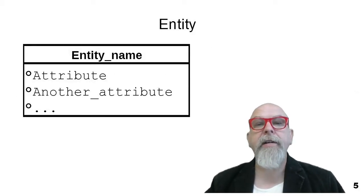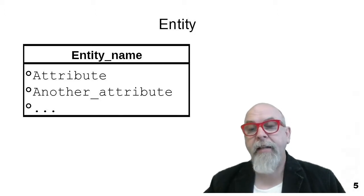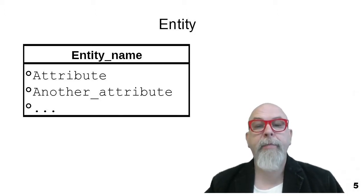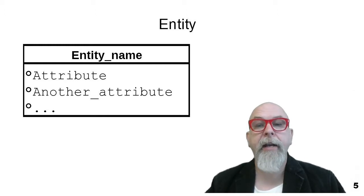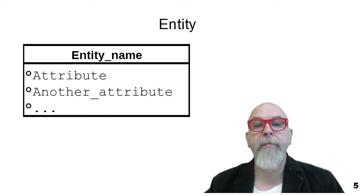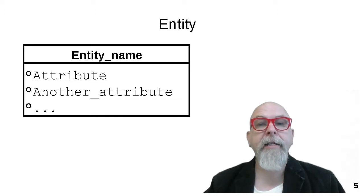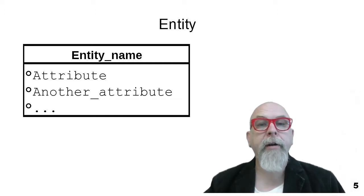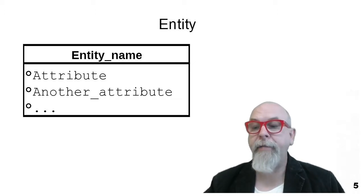Let's start by drawing a few entities. Here is a generic entity called 'entity,' and it has a couple of attributes associated with it. It's a rectangle with the top bar — the first line segregated and containing the name of the entity — and then below the bar in the bottom part are the list of attributes.